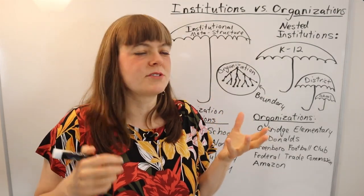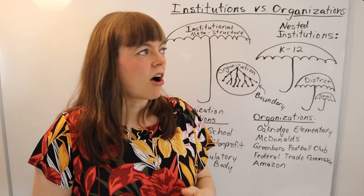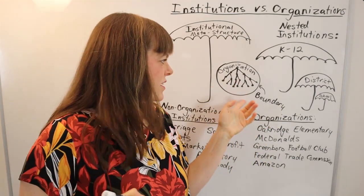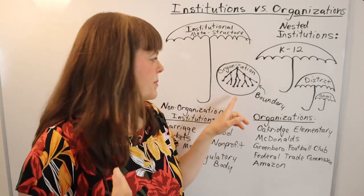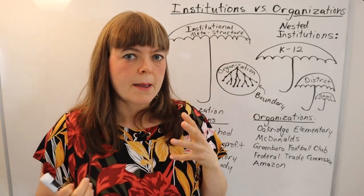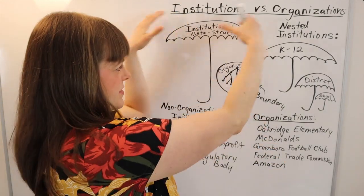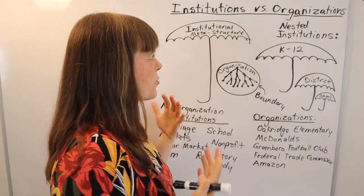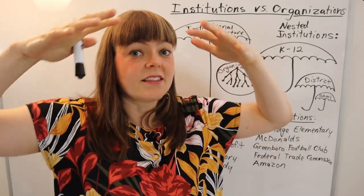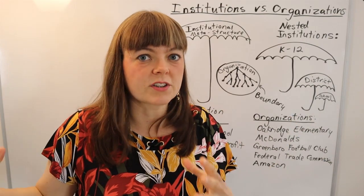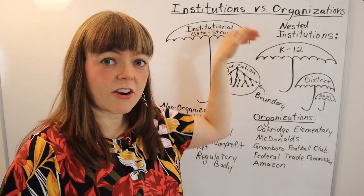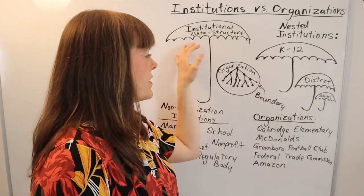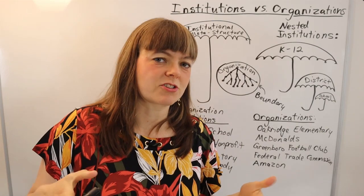These terms are sometimes used interchangeably. Often when people talk about institutions, they have organizations in mind — like specific universities or specific newspapers. But the institutional structure is the meta-structure for those, covering things like the rules of newspapers and the ethics followed within journalism. That's one layer up, or maybe multiple layers up. And it matters how well these meta-institutional structures are functioning.